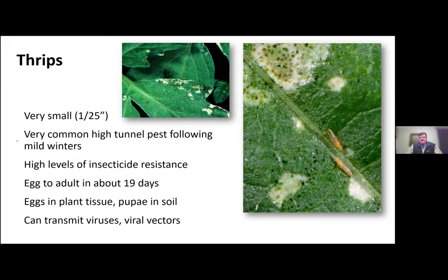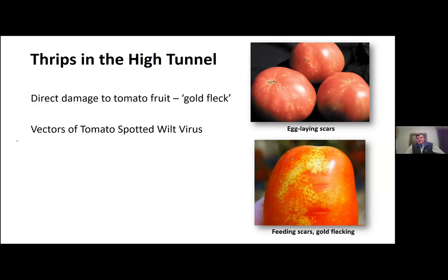The typical signs of damage: you get silver flecks on the leaf and little tar spots — that's their waste material. It looks a little different than disease in that with disease you'll see dark spots within those damaged areas, but with thrips they're associated with those damaged areas but not necessarily in them. They also damage the fruit — you can see gold flecking from their piercing-sucking mouthparts, and they can create scars in the fruit with their egg laying, particularly noticeable when the fruit begins to color up.